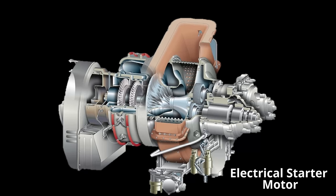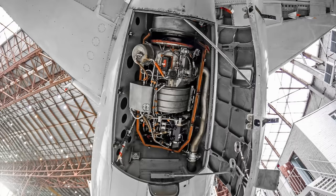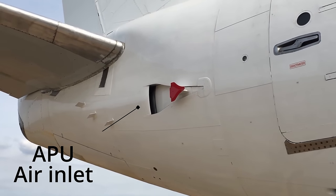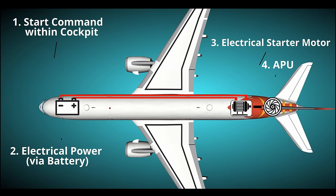The APU is a small, lightweight, single-shaft turbine engine. It sits in the rear of an aircraft and is typically the high-pitched noise you can hear while the aircraft is parked. The electrical motor gets the APU up to a speed where it can begin to burn fuel. The most important function is that the APU delivers high volumes of slightly compressed air.